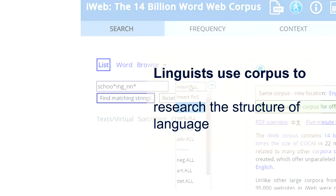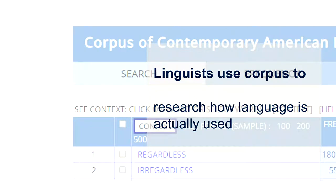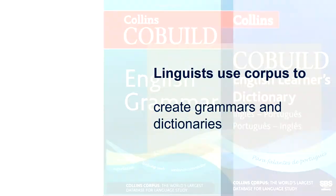Linguists use corpora to research the structure of language. It is an essential tool these days. But they also use it to find out how language is actually used, rather than how we think it should be used. And then these findings can be used to build new, better grammars and better dictionaries.